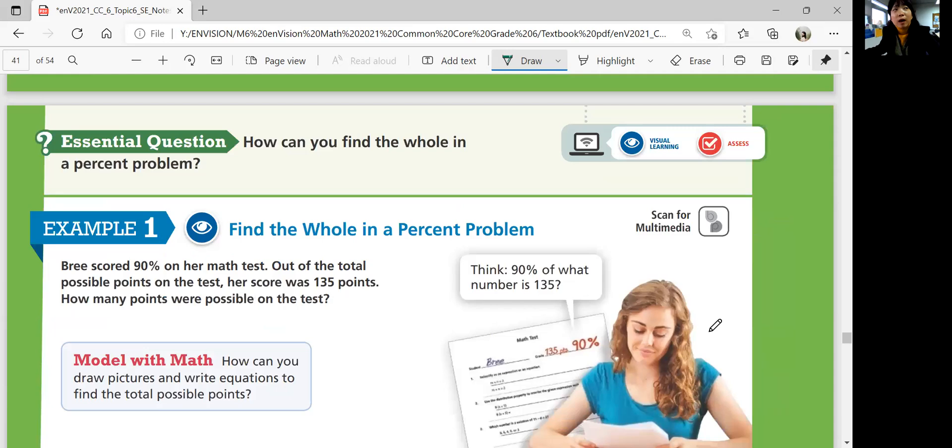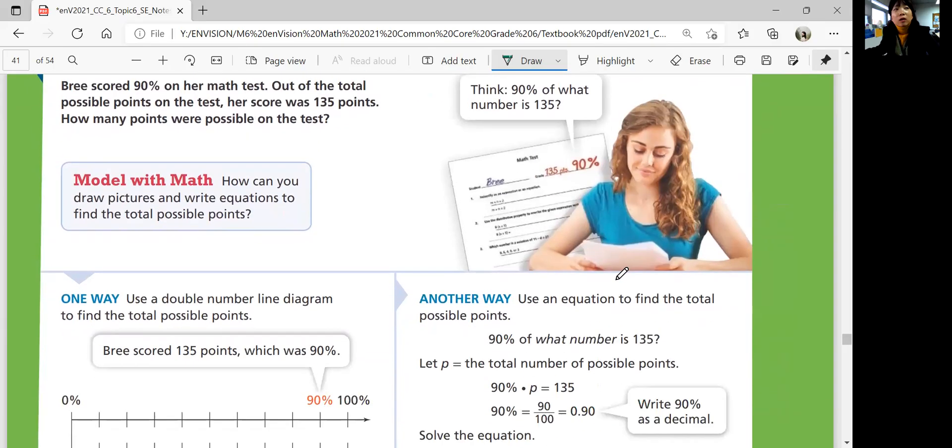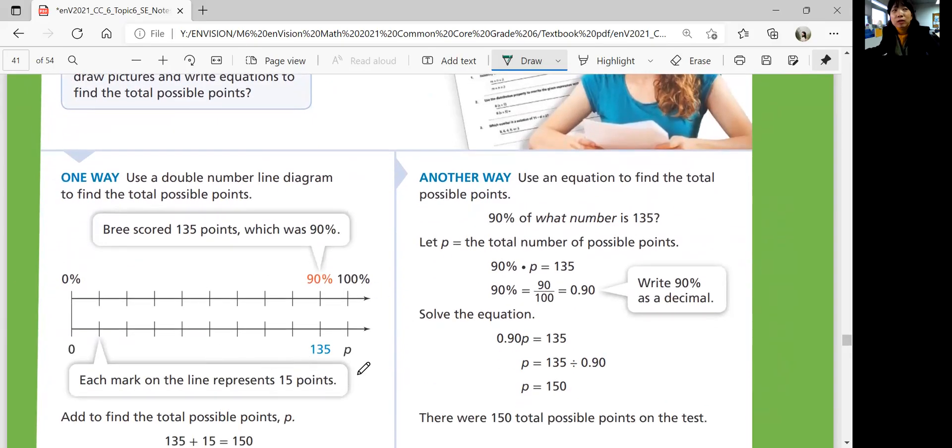So in this lesson, we'll think about how we can find a whole in a percent problem. Let's look at example one: Find a whole in a percent problem. Brie scored 90% on her math test. Out of the total possible points on the test, her score was 135 points. How many points were possible on the test? So she earned 135 points and that's 90%. How many points would she have to get in order to get 100%? So we're trying to figure out the whole. So you can use the double number line to represent it visually. 90% is 135, 100% would be P. So you can divide 135 by 1, 2, 3, 4, 5, 6, 7, 8, 9 to get how much it is for 10%. So every mark would be 15 points.